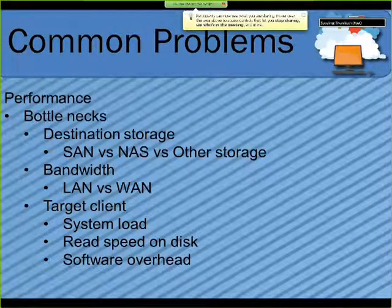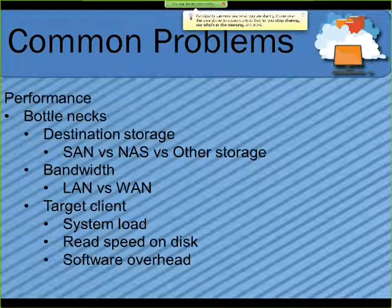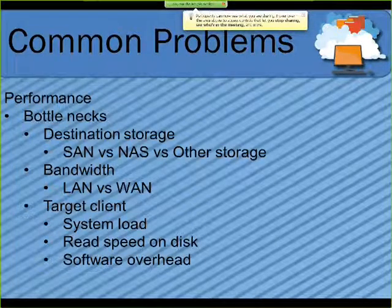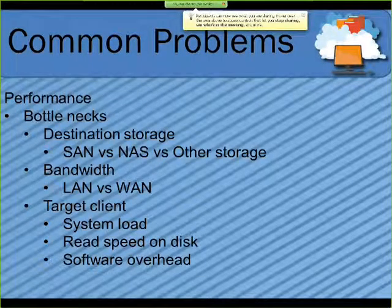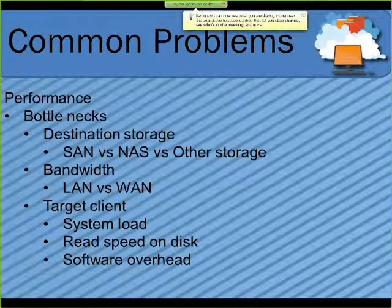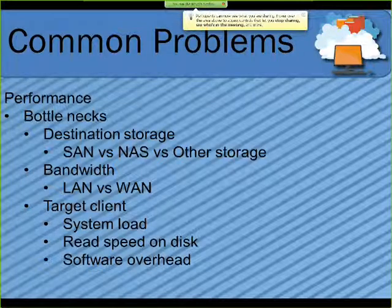Some common problems that can come up during backups: performance is the first one. There are a lot of bottlenecks you can hit depending on your solution. Your destination storage — whether a SAN, network-attached storage, or local disk — requires you to keep in mind both the bandwidth going to the destination and the actual disk write speed theoretically possible on that device. Your bandwidth matters too: if you're doing backups over the LAN, you'll see a higher transmission rate than over the WAN, but you're going to see a larger backup window for WAN backups.